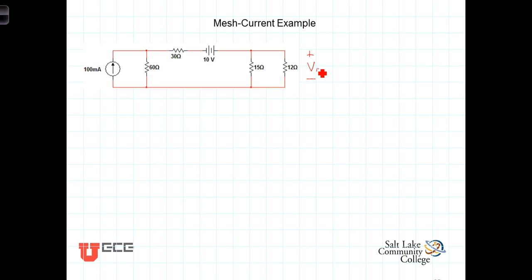Let's get started here. Our first step is to identify the meshes. As you can see, we have three meshes: one here, this one in the center, and then one there. Now let's define mesh currents in each of those meshes. We'll call this i1, we'll call this one here i2, and call this mesh current right there i3.